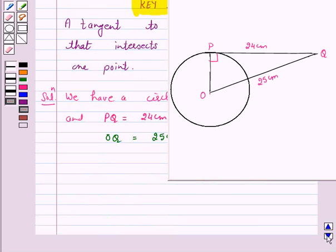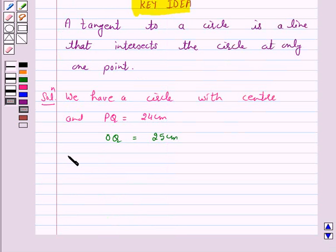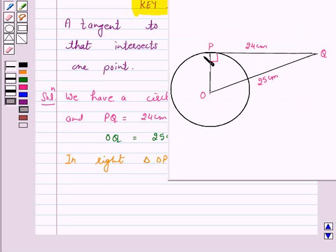So we have a triangle OPQ right angled at P. In right angle OPQ, now PQ and OQ are given to us. First, we want to find OP.